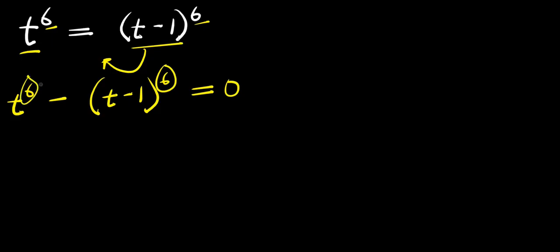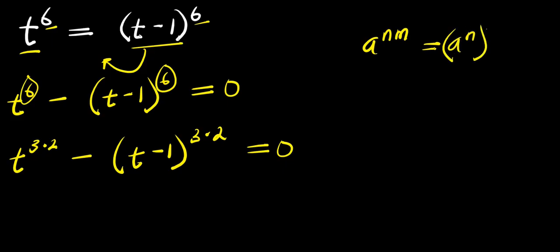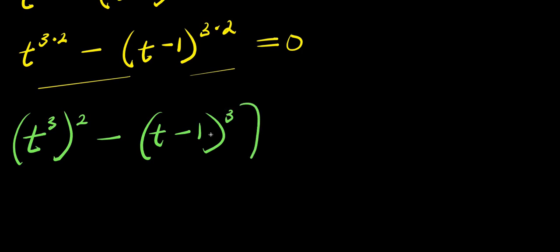We have power 6 here and power 6 here. I can express 6 as a product of 3 and 2, so I have t^(3×2) minus (t minus 1)^(3×2) equals 0. Now if you have a^(n×m), this equals (a^n)^m. Applying that identity, we get (t³)² minus ((t-1)³)² equals 0.